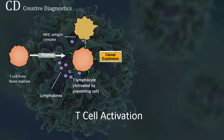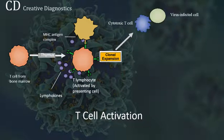In the thymus, T-cells multiply and differentiate into helper, regulatory, or cytotoxic T-cells, or become memory T-cells.